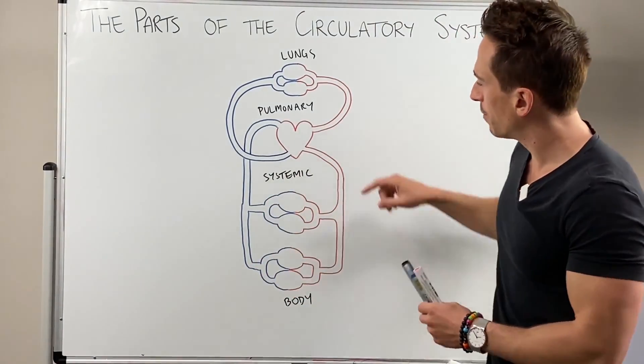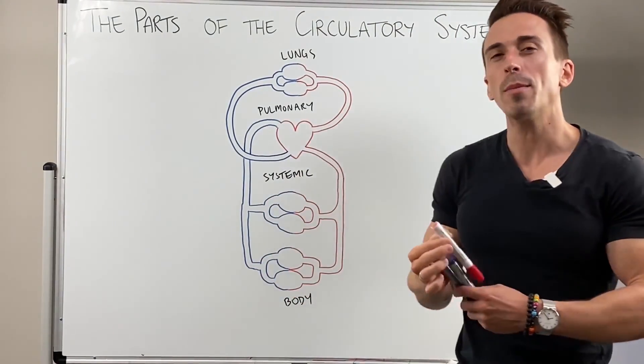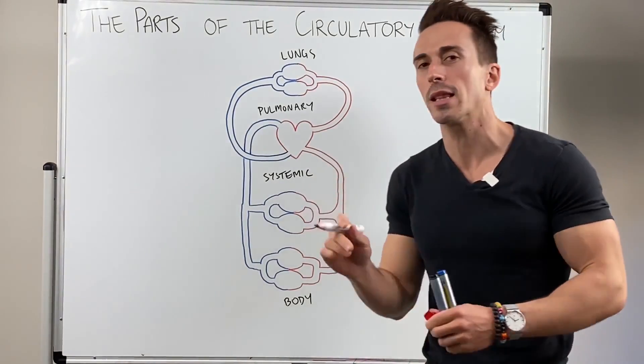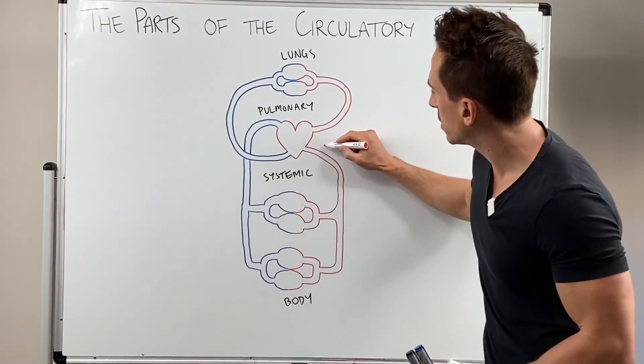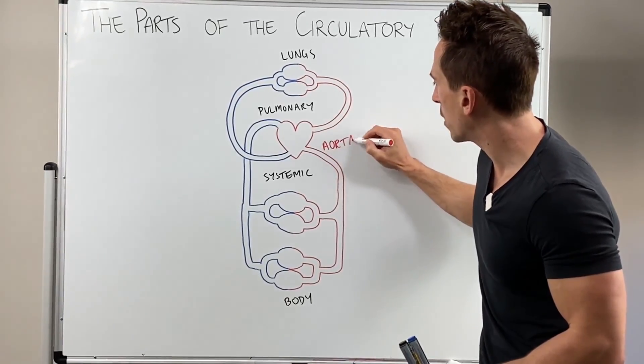So what I want to begin with is we're going to start here coming out of the left hand side of the heart, particularly the left ventricle. We've got this big blood vessel here called the aorta. Now the aorta is an artery.